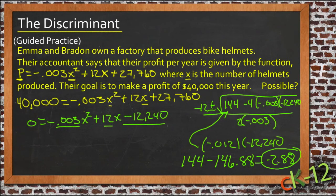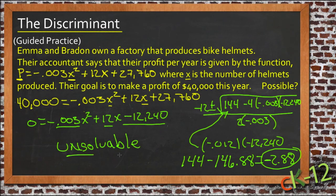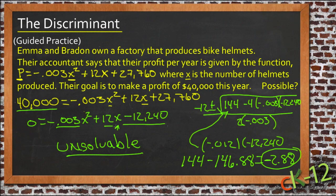You can't get the square root of a negative. There is no number that would be the square root of negative 2.88, which means we can't solve this expression. If it's unsolvable, then there are no real values for x that would make this profit of $40,000 work. So there's no way they could actually make that $40,000 profit that year, no matter how many helmets they made.